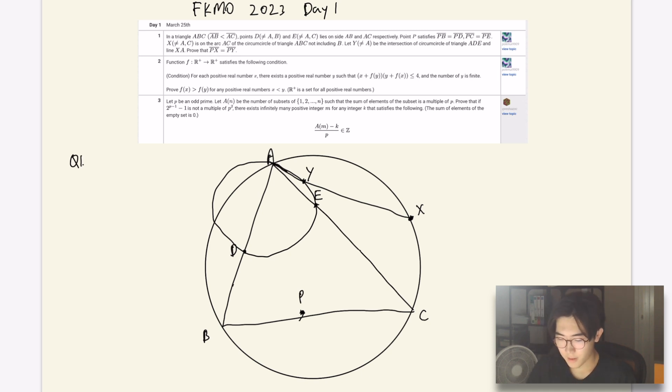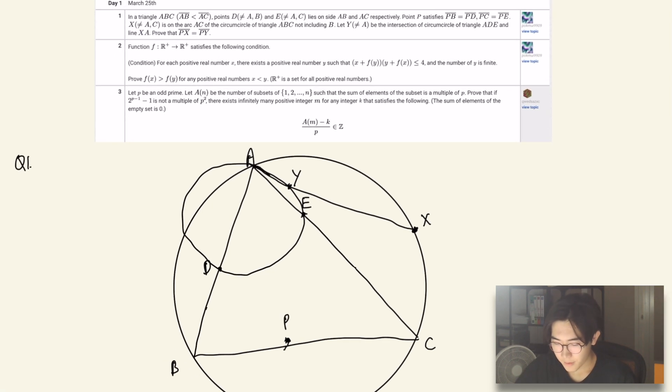If you look at the first question, it states that in a triangle ABC, points D and E land at AB and AC respectively, where point P satisfies the fact that PB equals PD and PE equals PC, and X is on the arc of AC here, such that Y is the intersection of AX with the circumcircle of ADE.